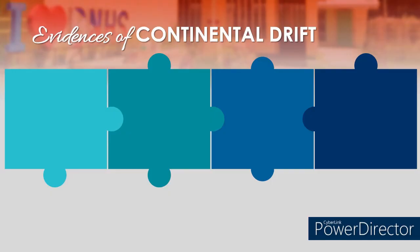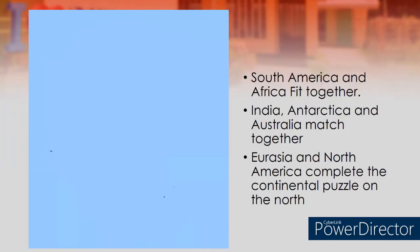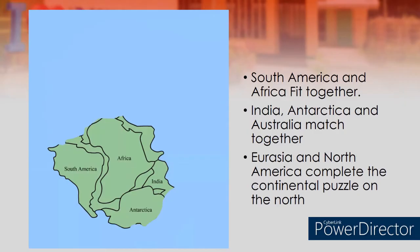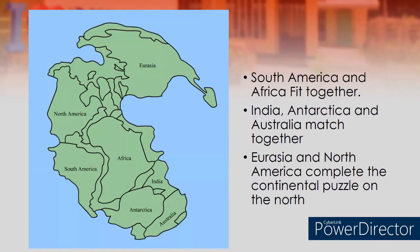The first evidence we have already discussed: the jigsaw puzzle fit of the continents. According to Wegener, the edge of one continent surprisingly matches the edge of another. South America and Africa fit together. Surprisingly, India, Antarctica, and Australia match one another. And lastly, Eurasia and North America complete the whole continental puzzle in the north.